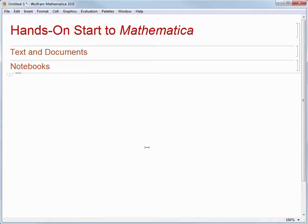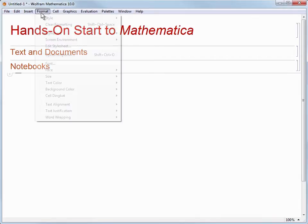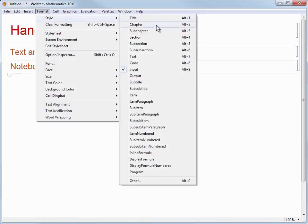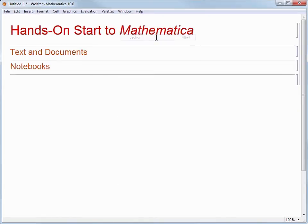So let's create another section cell, but this time instead of using the cell insertion assistant, go up to the menu bar at the top and choose Format, then Style, and then Section. As before, Mathematica creates a section cell and places the cursor inside of that cell, so let's type the word Cells.